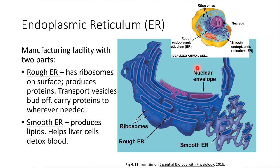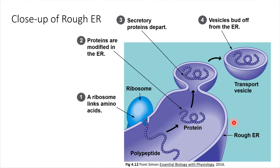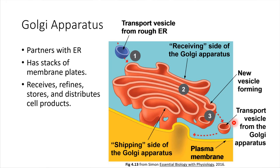The smooth ER is doing a different job. Instead of making proteins, what it's doing is making lipids. This is particularly helpful — this organelle is especially helpful in cells that have to detox our blood, like cells of the liver, where the smooth ER really helps them to do that effectively. So that was the rough ER and the smooth ER.